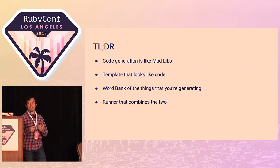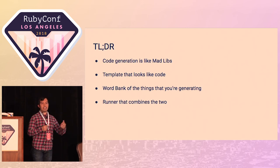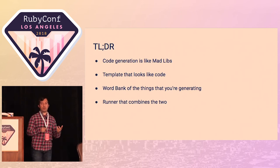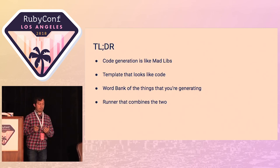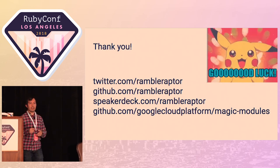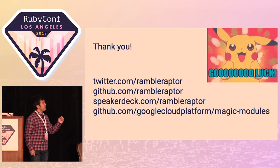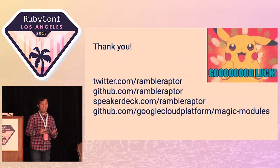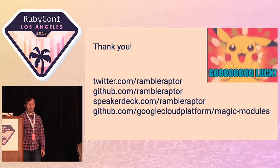To wrap up: code generation really is like Mad Libs. It's taking a template that looks like Ruby code, Python code, or Go code, and taking a word bank of things from various APIs you're interacting with, and combining them to build functional code that is run through an interpreter or compiler in the exact same way that your human-written code is. Thanks a lot. I'm available throughout the interwebs — Twitter, GitHub, SpeakerDeck — all at RambleRaptor. Slides are already posted up there. If you're interested in seeing the code generator I've been working on full time, it's at GitHub.com/GoogleCloudPlatform/MagicModules. Good luck — hopefully this is useful and you can find uses for it in the real world.